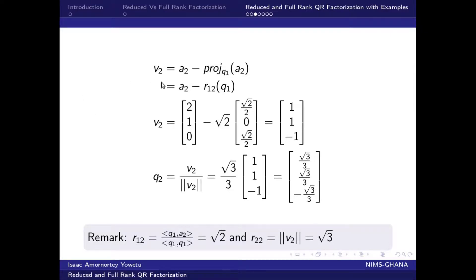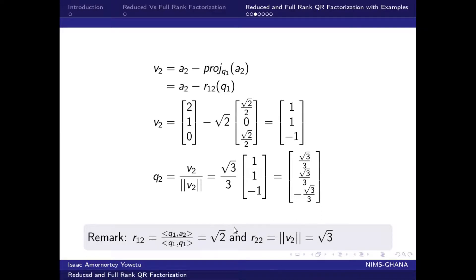We then go ahead to find our V2. To get V2, we have A2 minus the projection of A2 onto Q1. We express V2 as A2 minus R12 times Q1. To get our R12 scalar — which is the row 1 column 2 element in the right upper triangular matrix — we find the inner product of Q1 and A2, divided by the inner product of Q1 and Q1, which gives us root 2. We substitute it into the expression, which gives us our V2 vector.